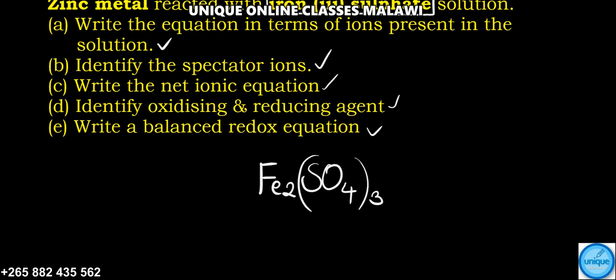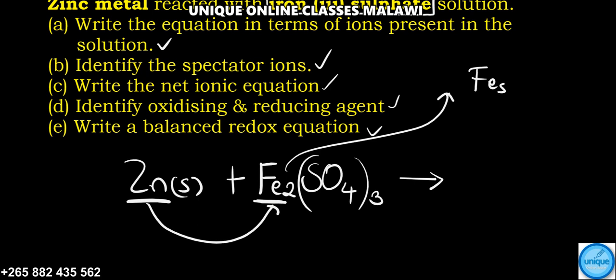This will be reacting with zinc metal, so you have zinc metal plus iron(III) sulfate solution. What will happen? During our displacement series, zinc is above iron.